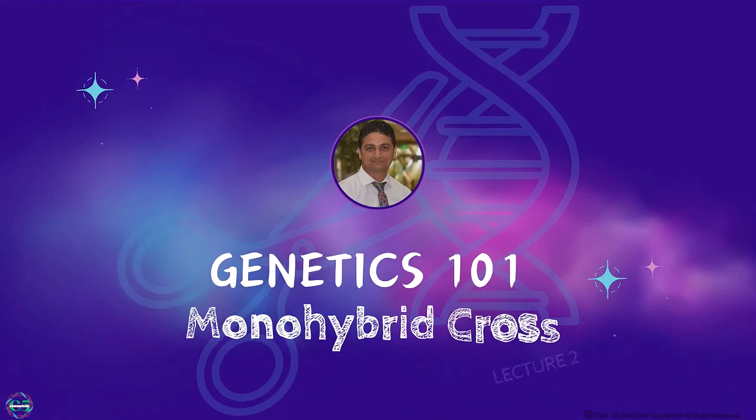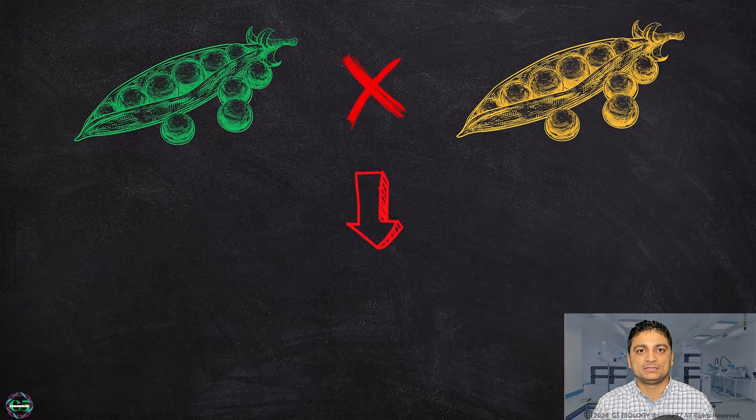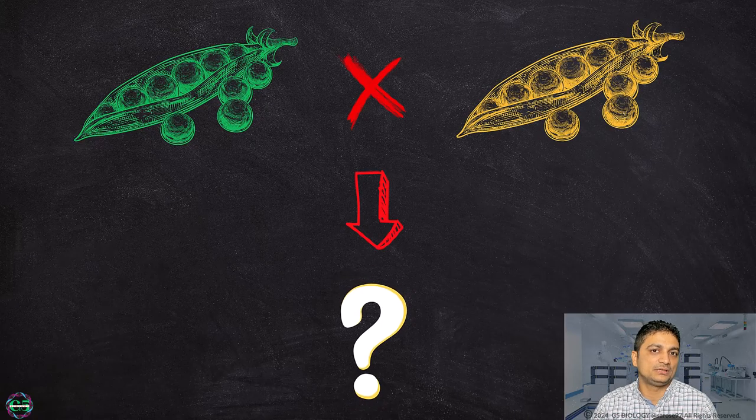In this video we'll be talking about monohybrid cross with an example of pea pod color. Let's start with a simple question: what is going to be the pod color of the offspring if we cross two pea plants, one with green pod color and the other with yellow pod color? Welcome back to Genetics 101. In today's lecture we'll be focusing on the monohybrid cross with an example of pea pod color.